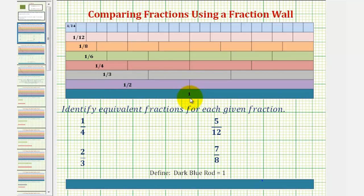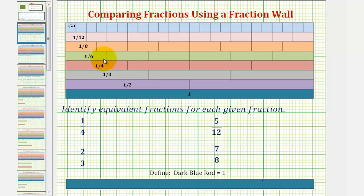If we cut or denominate one whole into three equal partitions, each of these rods are equal to one-third. If we cut or denominate one whole into four equal partitions, each of these rods are equal to one-fourth. Similarly, each of these rods are equal to one-sixth, and then we have a one-eighth rod, a one-twelfth rod, and a one-twenty-fourth rod.